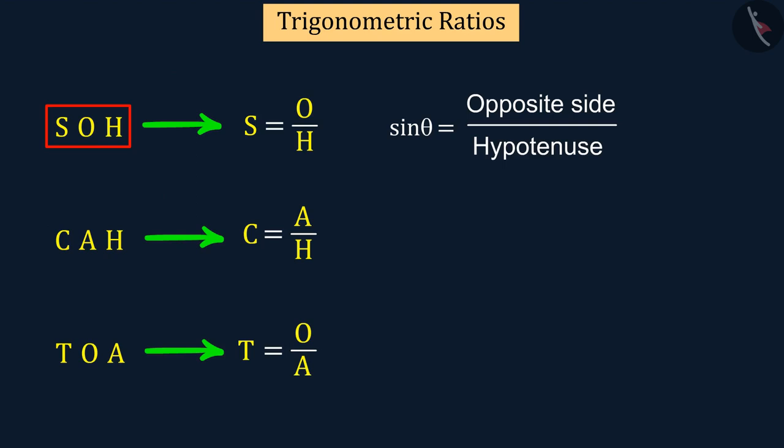S means sine, O means opposite side, and H means hypotenuse. That is, the sine of any angle is the ratio of its opposite side to the hypotenuse.